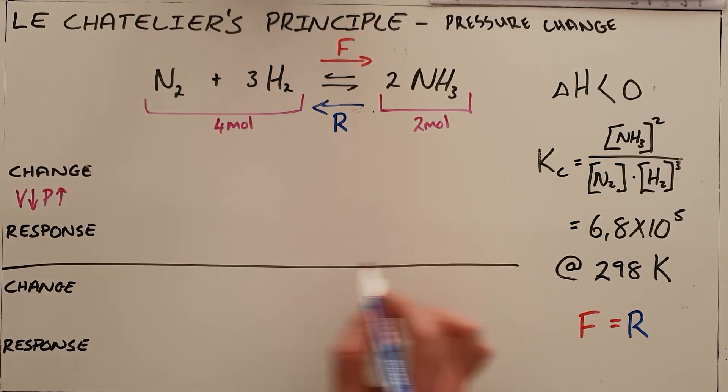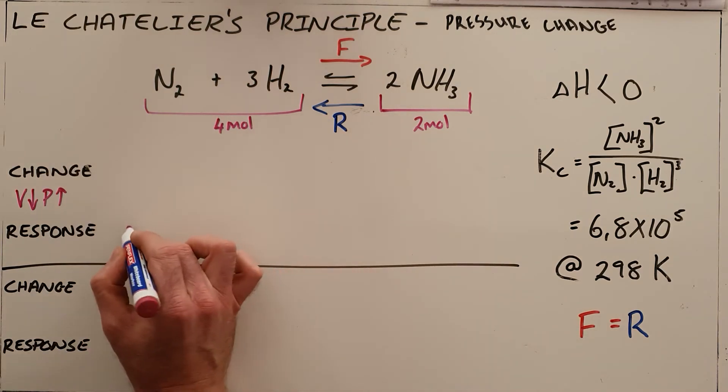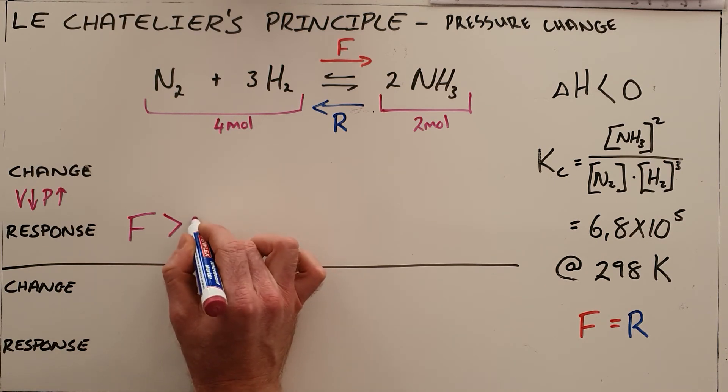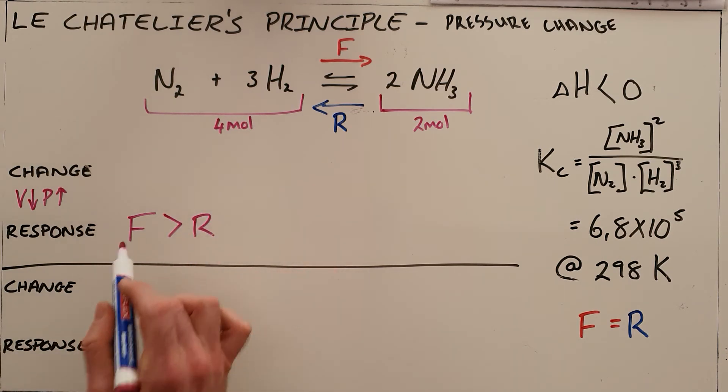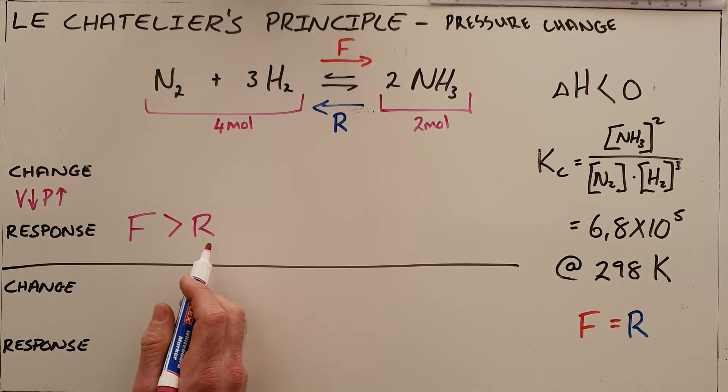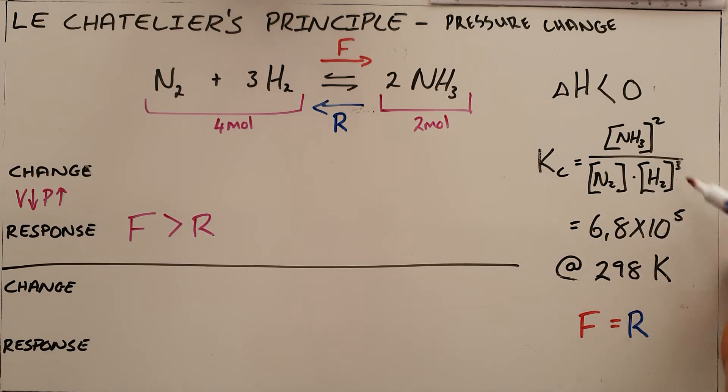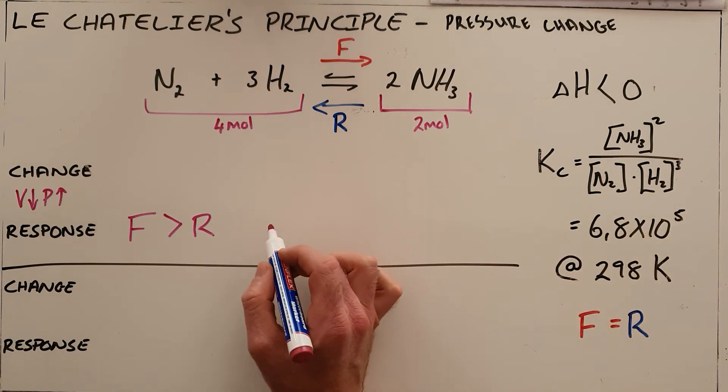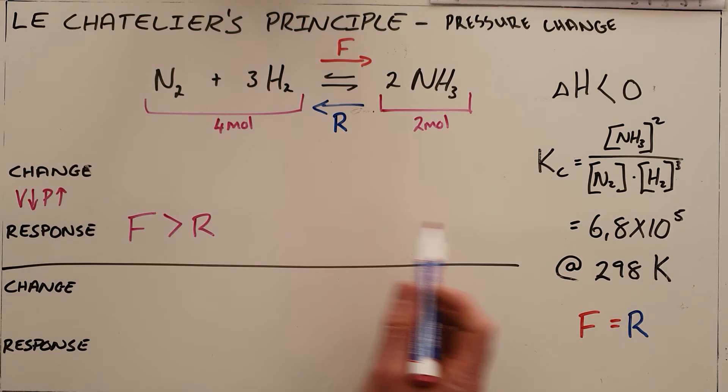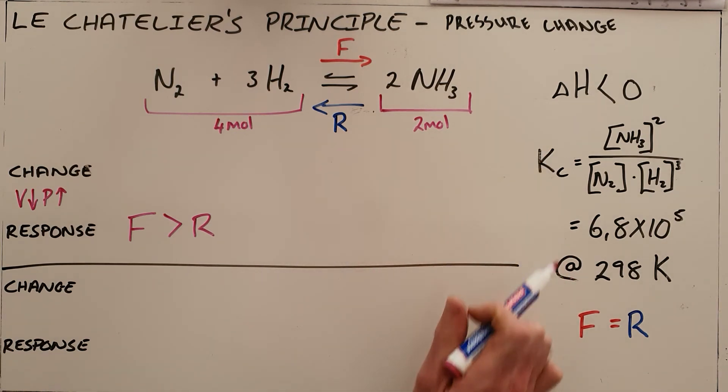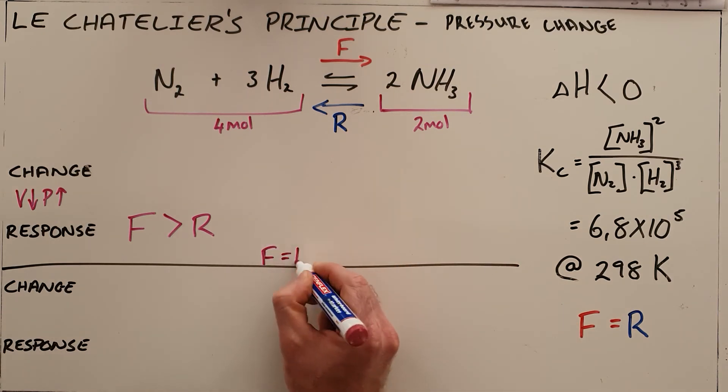So the reaction's response is to favour the direction that produces less stuff. That is to favour the forward direction over the reverse direction, meaning the rate of the forward reaction is greater than the rate of the reverse reaction for a period of time. Again, all happening in this fixed ratio until once again equilibrium is re-established, and our Kc value remains the same because temperature has not changed. And then equilibrium is re-established where the rate of the forward is then equal to the rate of the reverse.